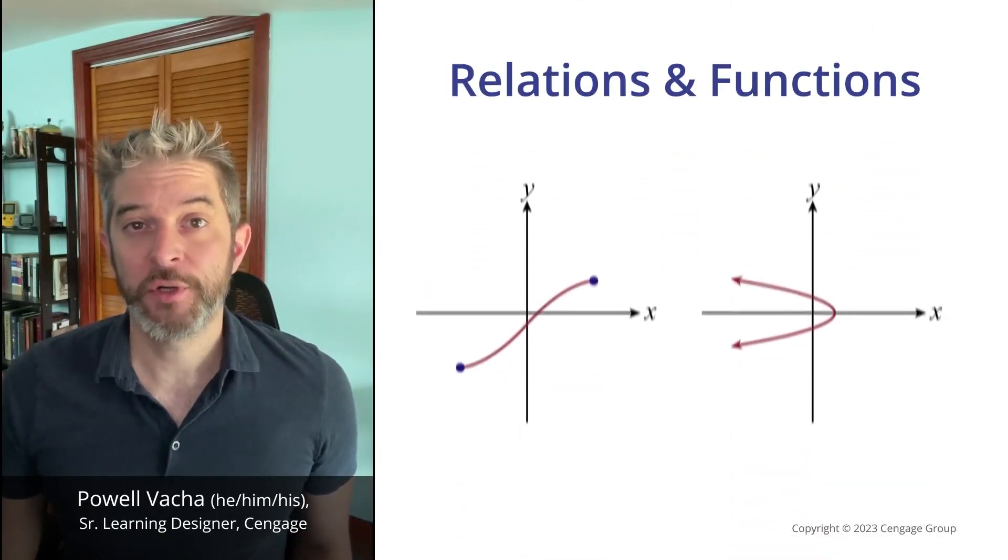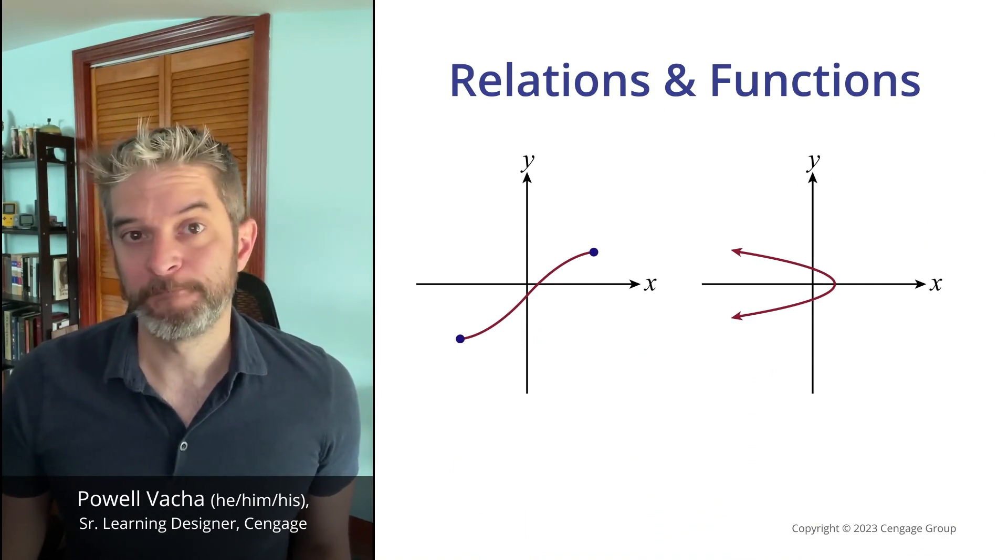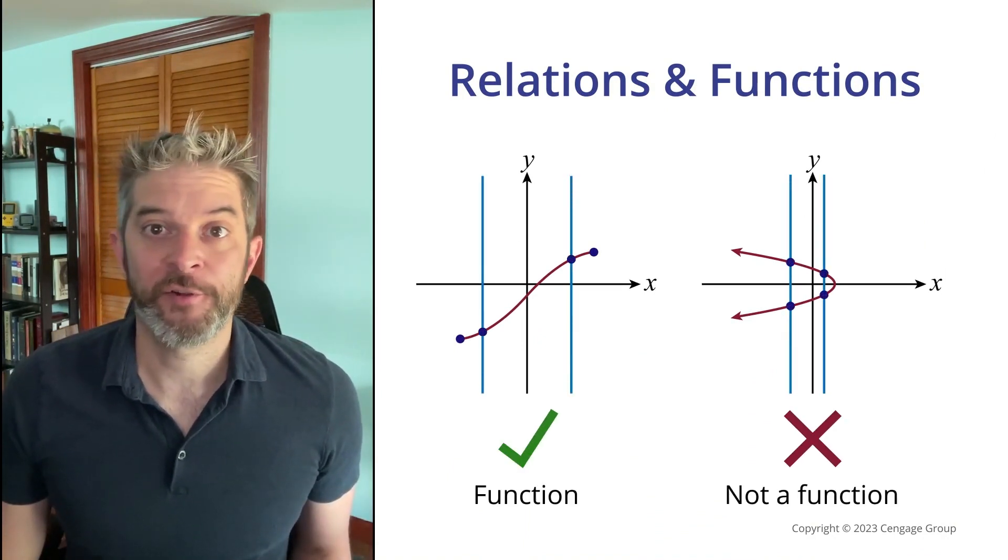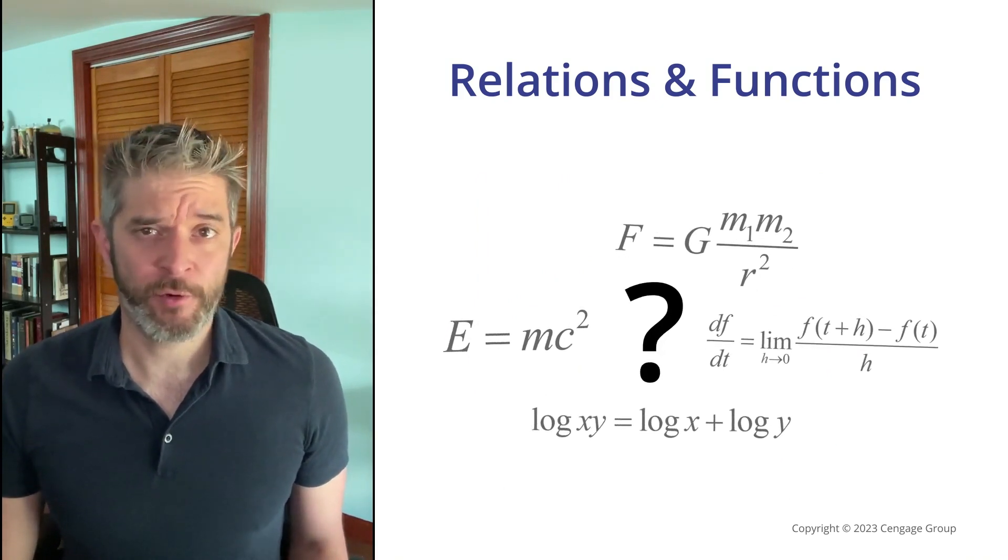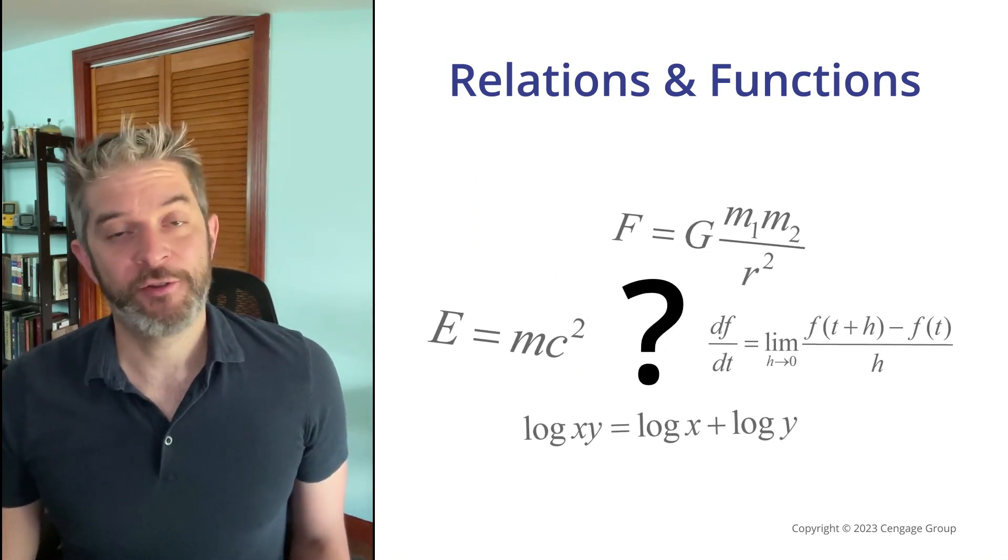Functions are relations where each input corresponds to exactly one output. We can see this graphically using the vertical line test. But how can we tell if a relation is a function from a set of ordered pairs? Let's take a look at a few examples.